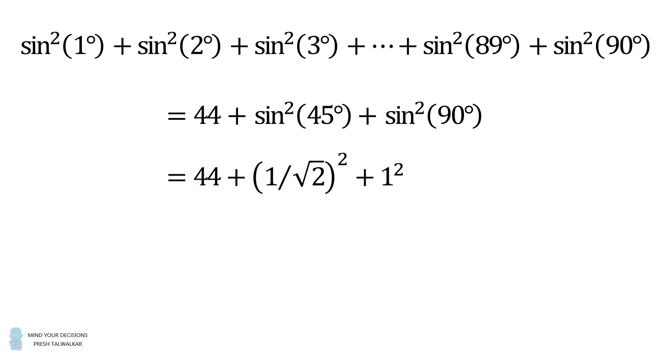Sine of 45 degrees is equal to 1 divided by the square root of 2, and sine of 90 degrees is equal to 1. We then square both of these terms and add to get 44 plus 1 half plus 1, and that's equal to 45.5. And that's the answer.